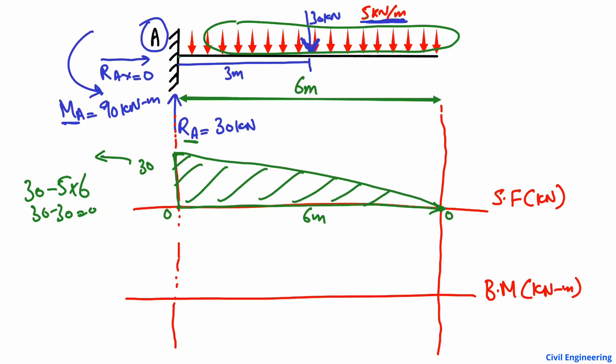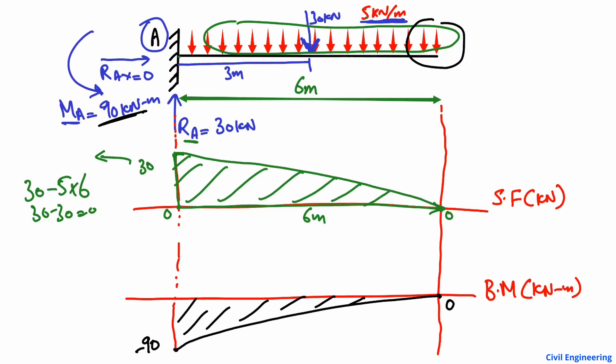To draw the bending moment diagram, there are two methods. In the first method, we know that MA equals 90 kN·m at point A. It is a negative bending moment because a cantilever beam always takes negative bending moment, so it is minus 90 kN·m. At the free end there is no support, so the bending moment there is zero. We draw the bending moment diagram from minus 90 kN·m at A to zero at the free end.